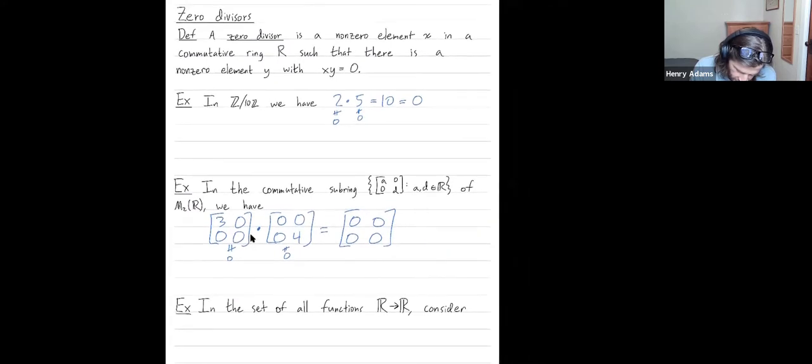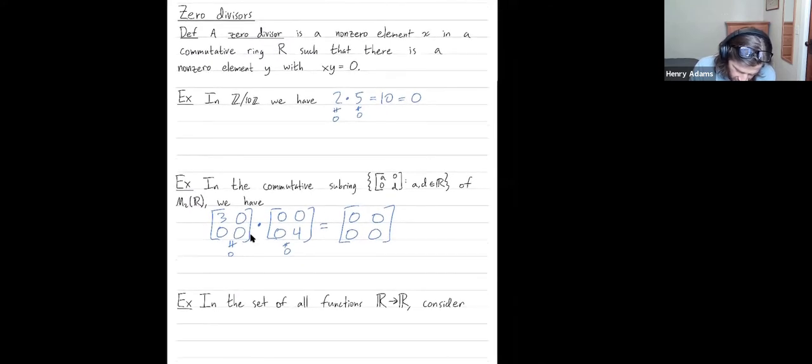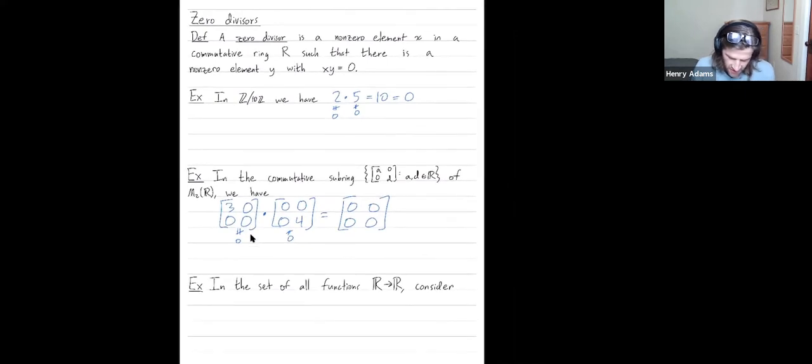Okay, let me talk about one more ring that has zero divisors. Consider the set of all functions from the reals to the reals. In our last video we saw that's a ring, but we could definitely have zero divisors here.